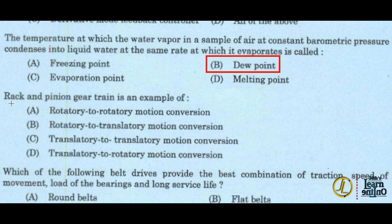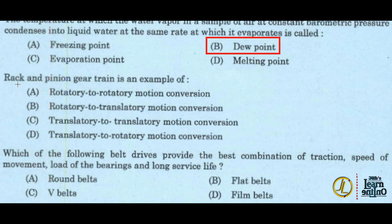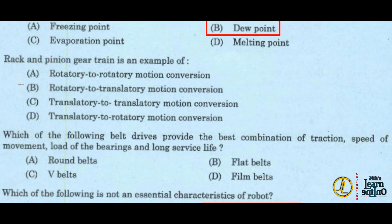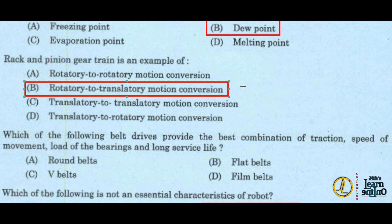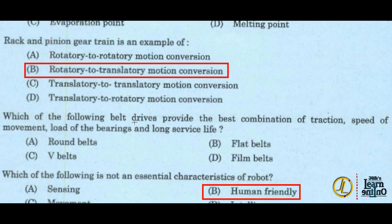Next: a rack and pinion gear train is an example of a linear motion mechanism. Which of the following belt drives provides the best combination of traction, speed of movement, load on the bearing, and long service life? Option C is the answer.